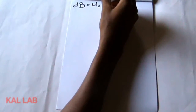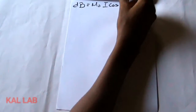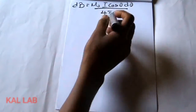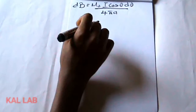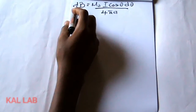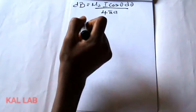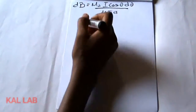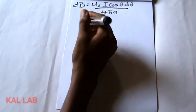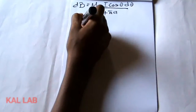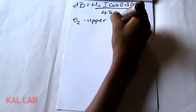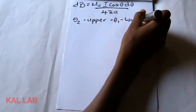So we are left with dB equal to μ₀·I·cos²θ·dθ over 4π·a. Since this is dB, we still need to integrate to get B. When we integrate, we have to consider all the values of θ. We integrate between θ₂ as the upper boundary and −θ₁ as our lower boundary.